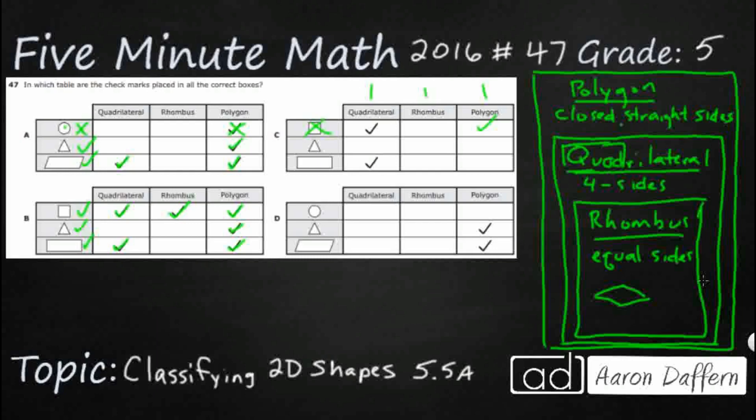Circle is not a polygon, correct. Not a quadrilateral. So this looks good. Triangle is a polygon and is not a quadrilateral or rhombus. That's good. Look at D. The parallelogram is a polygon but it should be a quadrilateral. So our answer here is B.